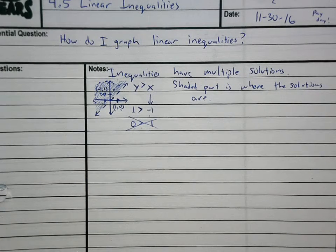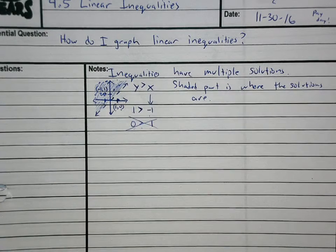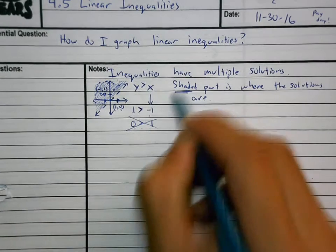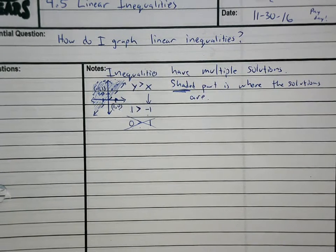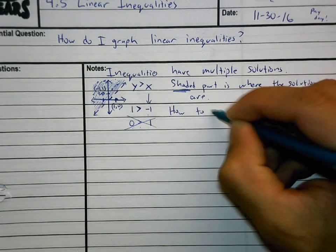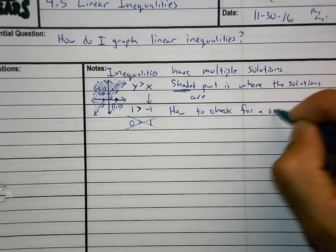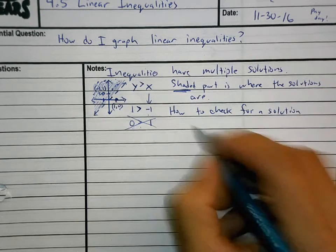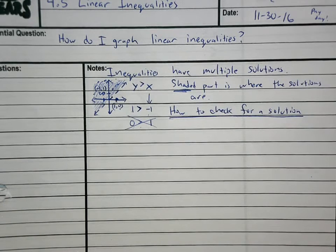So you have a 50-50 shot when you are graphing, and that's what we're going to work on today — how to graph. The first thing I needed you to know is that these have multiple solutions; that's why we shade. The shaded part is where the solutions are. To check if something is a solution, you plug it in.